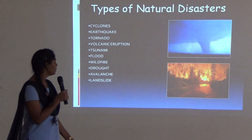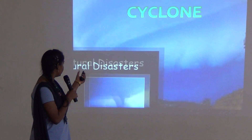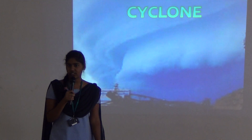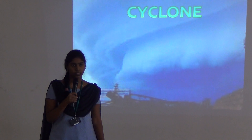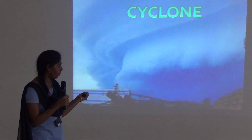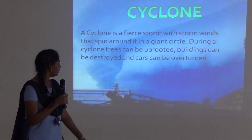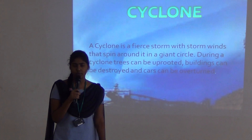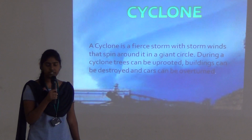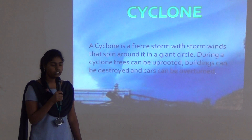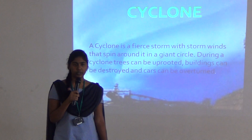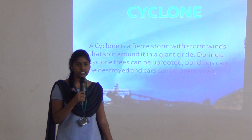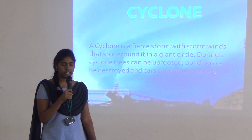I would like to consider cyclones first. What is a cyclone? Cyclones are fierce storms with strong winds that spin around in a circular chain. Cyclone winds can be up to deadly speeds, and sometimes cars can be overturned and men can be displaced.